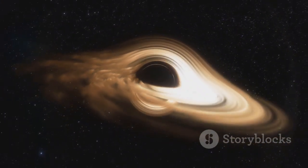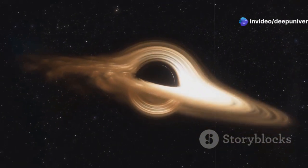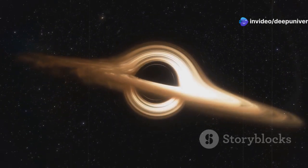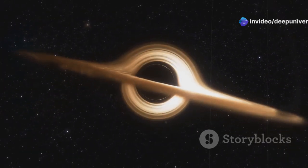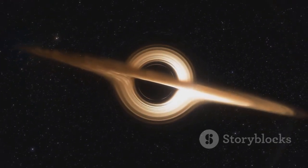Similarly, a black hole's immense gravity warps the fabric of space-time, bending the path of light that passes nearby. This phenomenon is known as gravitational lensing. This bending of light can create multiple images of distant objects behind the black hole. It allows astronomers to study objects that would otherwise be hidden from view, providing a unique window into the distant universe.